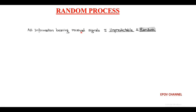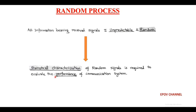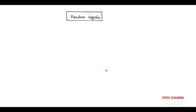Here, all the information-bearing received signals are random and unpredictable. In order to evaluate the performance of the communication system, there is a requirement of statistical characterization of the received random signal. The random signal is a function of time and bears three characteristics which are collectively called a random process.